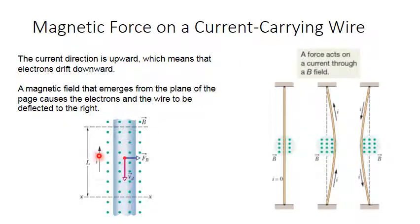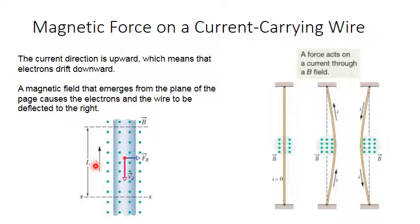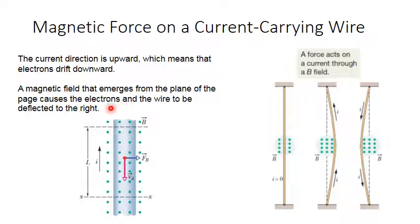If the current direction is upward, it means that the electrons are drifting downward, because electrons are negative charges and the free carriers inside any conductor are mainly electrons. So we are talking about negative carrier charges moving in the opposite direction of the conventional current. Assuming we have a magnetic field pointing out of the screen — toward us — this magnetic field emerging from the plane causes the electrons, and consequently the wire, to be deflected left or right according to the direction of the current.